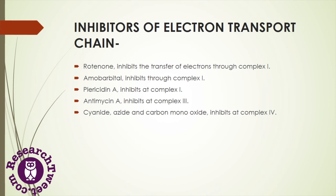Piericidin A, an antibiotic, also inhibits the flow of electrons at Complex I. Antimycin A, another antibiotic, inhibits the electron transport chain at Complex III. Cyanide, azide, and carbon monoxide interrupt electron flow and inhibit the electron transport chain at Complex IV.